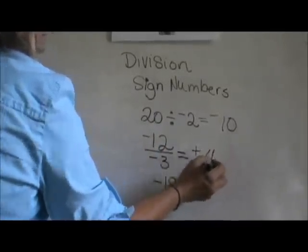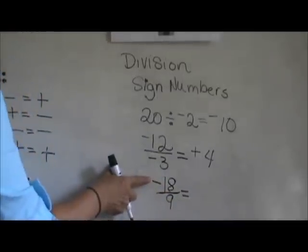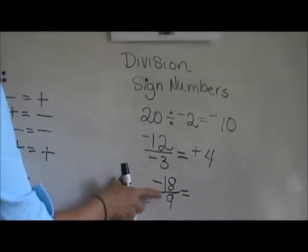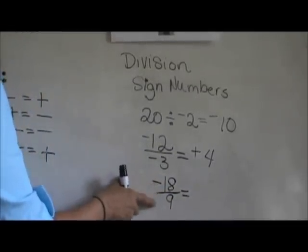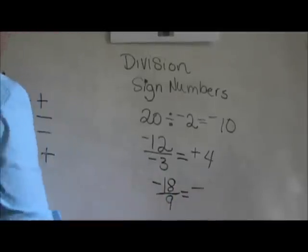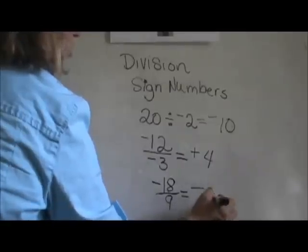12 divided by 3 is 4. The third one is negative 18 divided by positive 9. Since we only have one negative, the answer must be negative. 18 divided by 9 is 2.